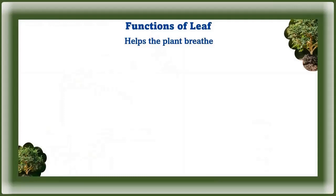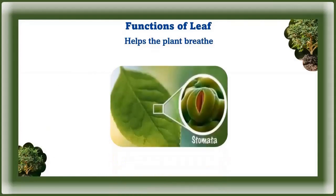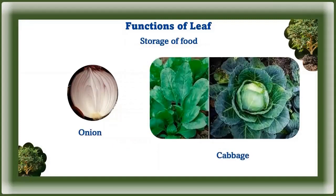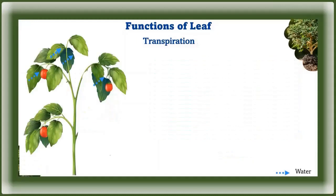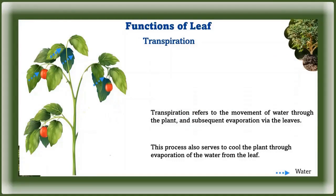Leaves help the plant to breathe. Stomata are responsible for regulating water in and out of the cell and are also responsible for the exchange of gases. Storage of food: in some plants, the leaves are modified to store food. Examples include lettuce, spinach, cabbage, onion, and garlic.